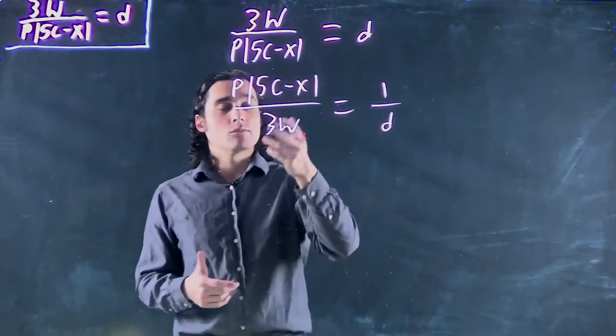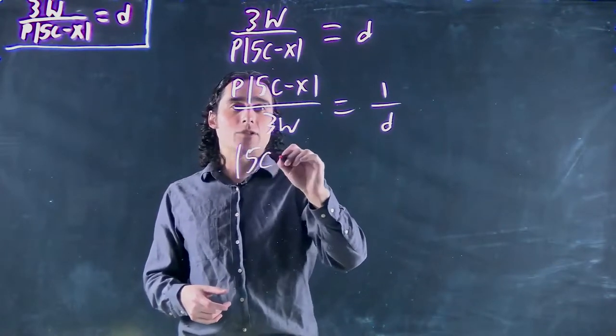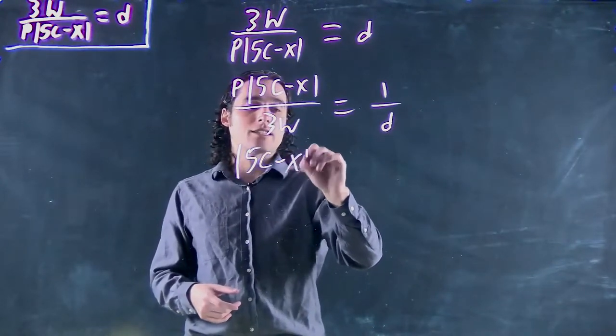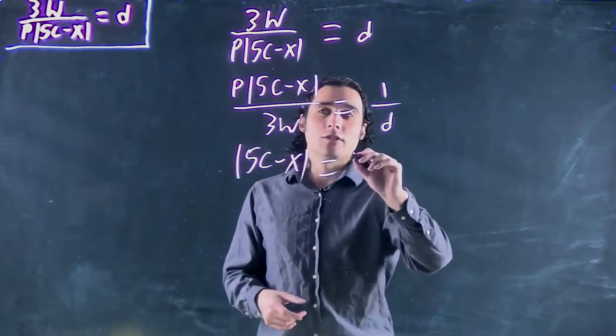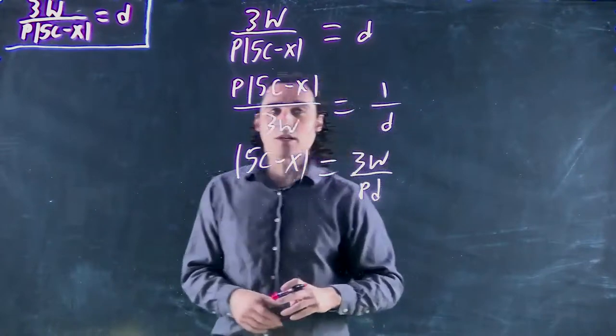Okay. Well, multiply both sides by 3w, divide both sides by p, and we're going to have absolute value of 5c minus x on the one side equals 3w over pd or dp, whatever order you want to go.